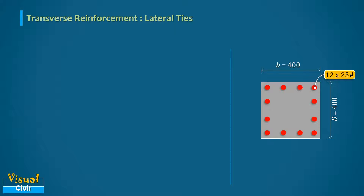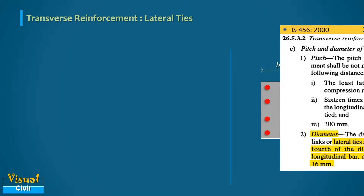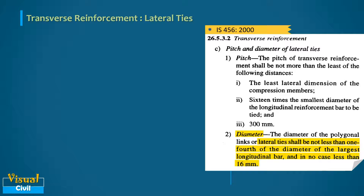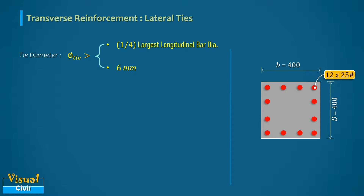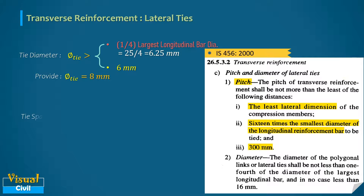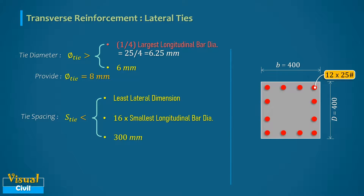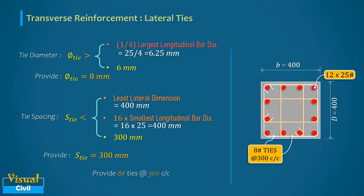For lateral ties, as per IS code the diameter shall not be less than one-fourth of the largest longitudinal bar diameter and not less than 6 mm. With 25 mm longitudinal bars, one-fourth gives 6.25 mm, so use 8 mm diameter bars for lateral ties. The spacing shall not exceed the least of: the least lateral dimension (400 mm), 16 times the smallest longitudinal bar diameter (400 mm), or 300 mm. Hence, provide 8 mm diameter lateral ties at 300 mm center-to-center spacing.